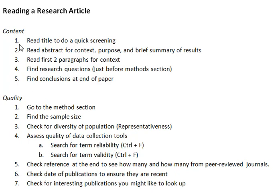So the first thing, if you're looking at content only, is you're going to read the title and do a quick screening to see if it's what you're looking for. If you're not quite sure, because sometimes titles are sort of obscure, then go to the abstract. The abstract should give you, probably in the first line, the context of the study, and then within the second line, the purpose, and then a brief summary of the results. That should give you a sense of whether you want to dig deeper into it, and at least an overview of the article and what was found.